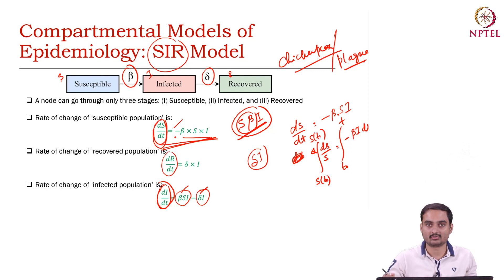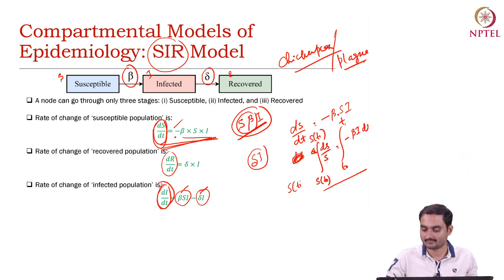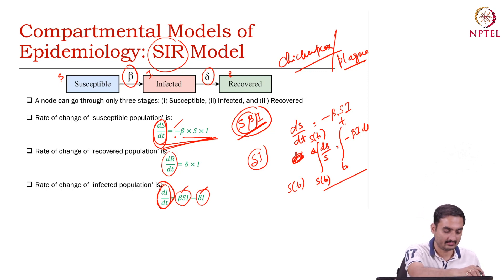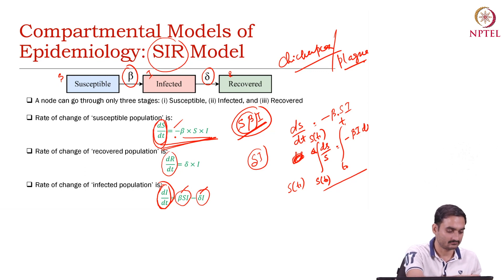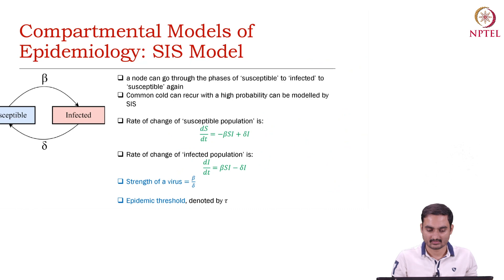So we are basically looking at the number of susceptible users at time t₁, for example. We integrate it and we get the value of S(t). Similarly for the recovered state and for the infected state. In that way you can get the number of infected users and number of recovered users and so on.